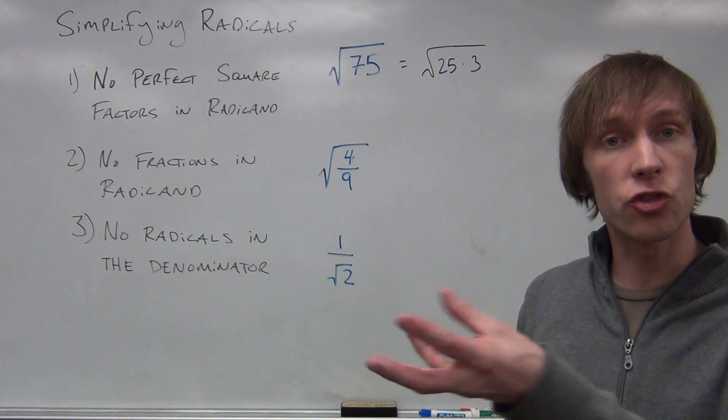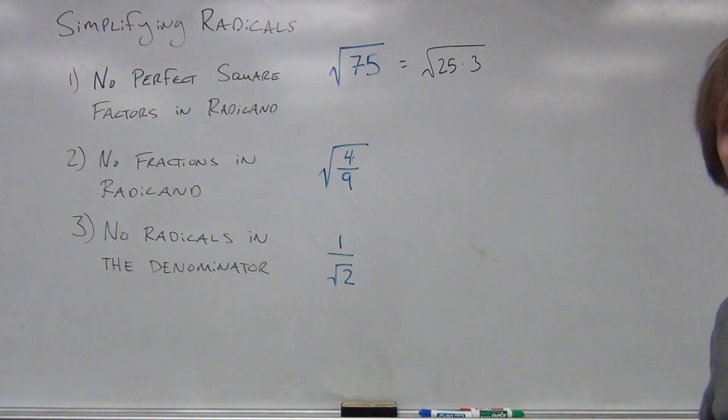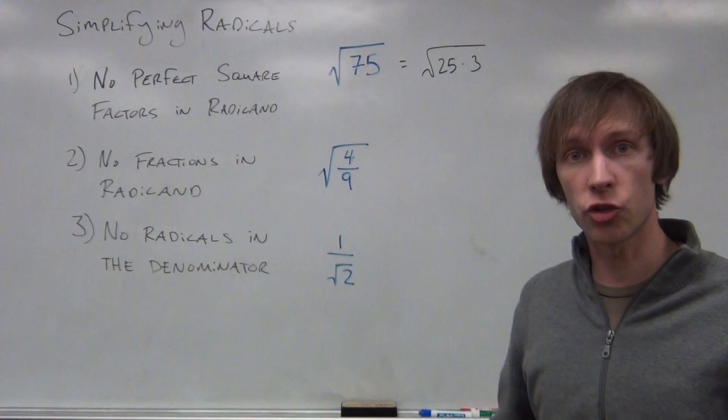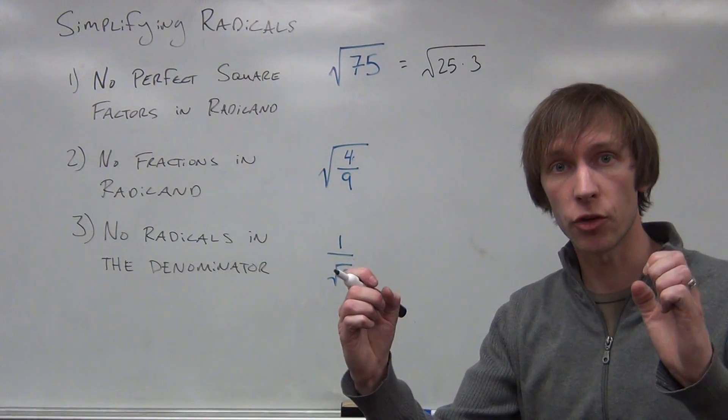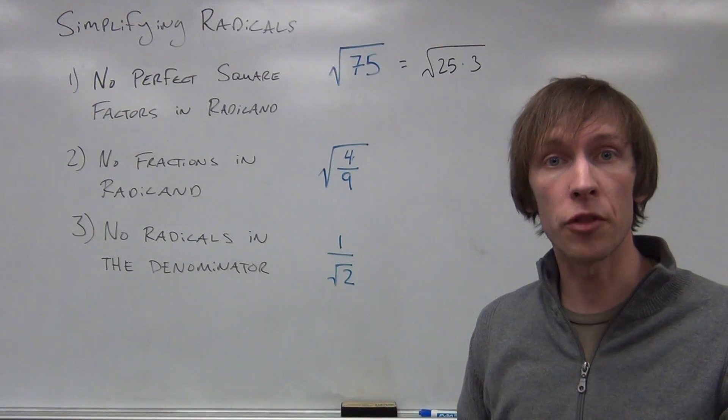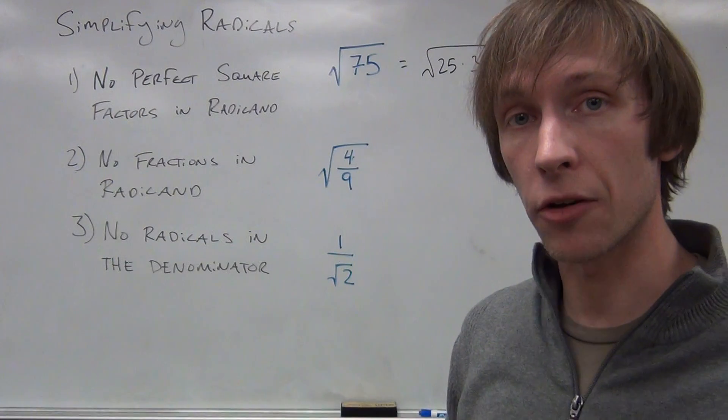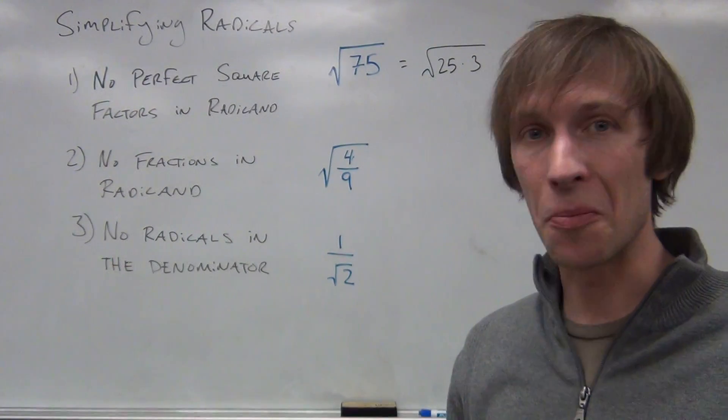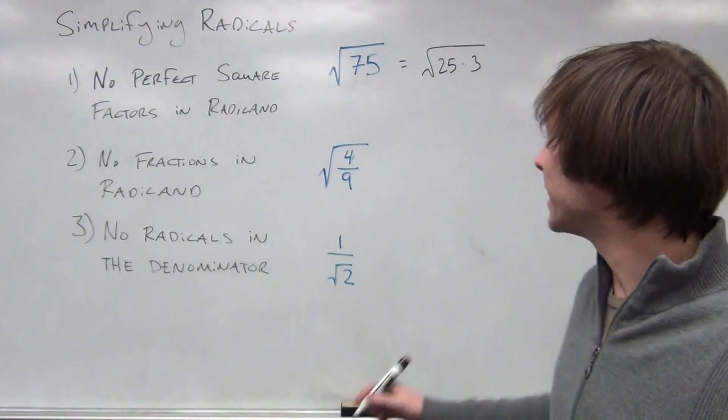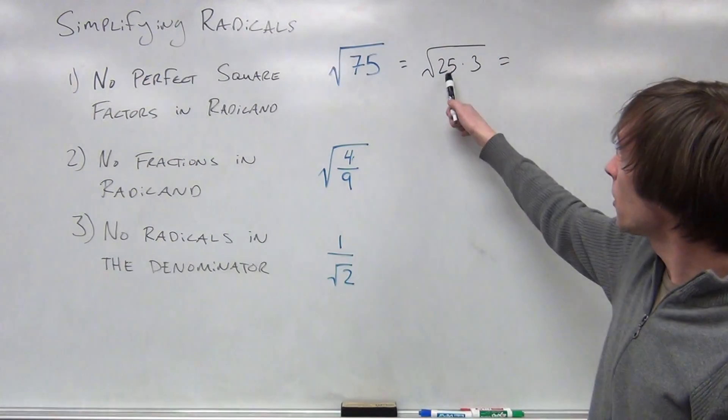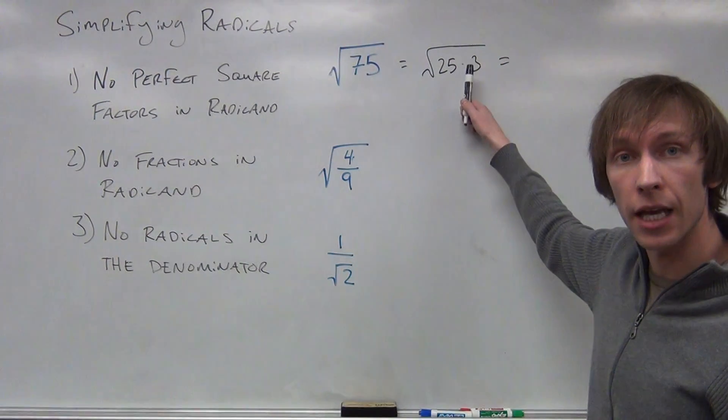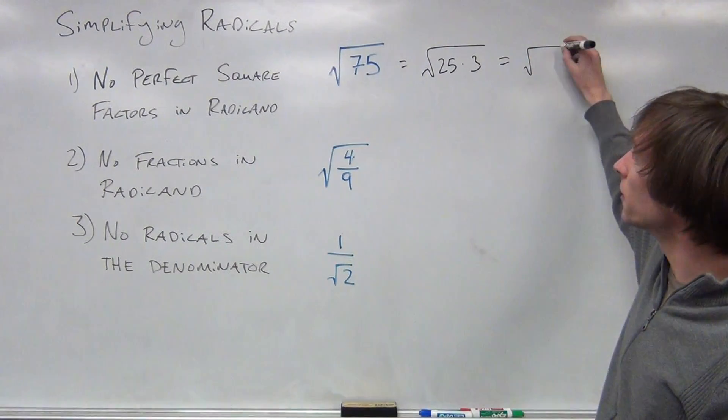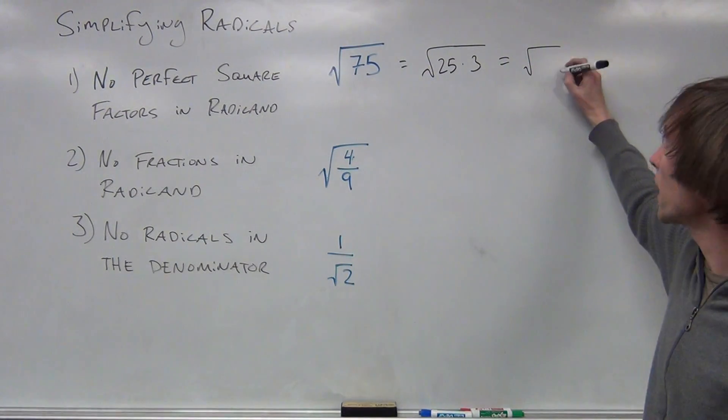We know that 75 is 25 times 3. So we can say the square root of 75 is the square root of 25 times 3. There is a property called the product property of radicals. It's very self-explanatory. The product property of radicals means that we can separate this product under the radicand as a product of radicals.